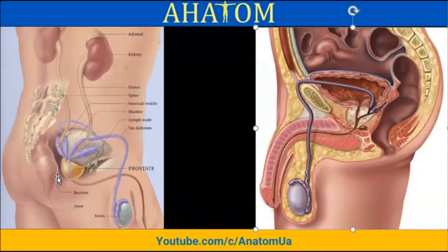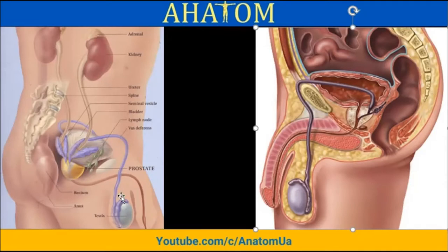Here is a view of these organs from a different position and with different coloring. For example, the prostate, vas deferens, testis, epididymis, seminal vesicle, penis, and scrotum are all visible here.